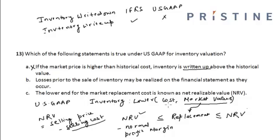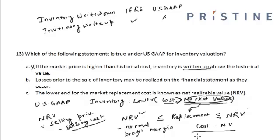If the cost of inventory is greater than the market value of the inventory, then on the balance sheet the inventory will be reported at its market value, and the difference — cost minus market value — is reported as a loss in the income statement.